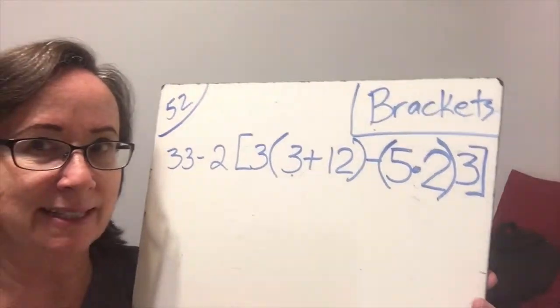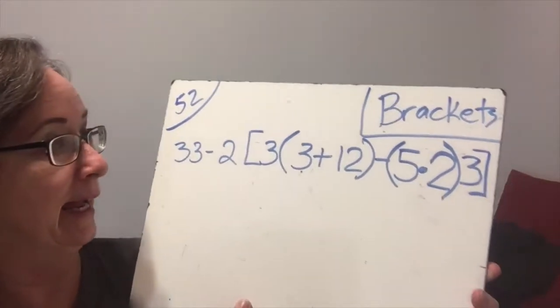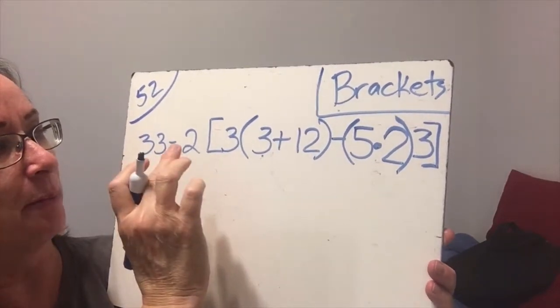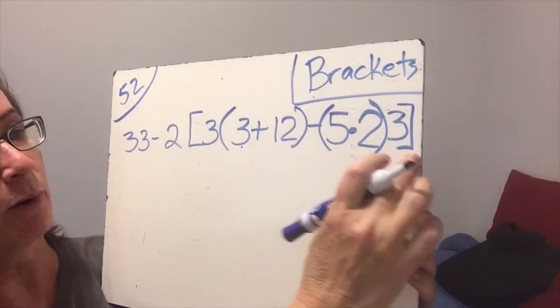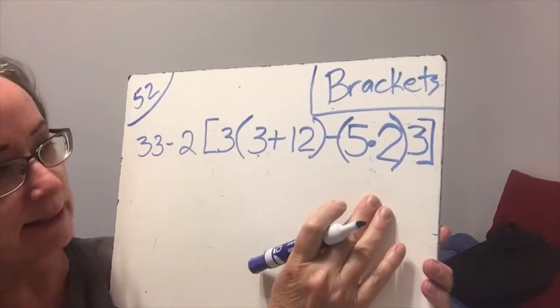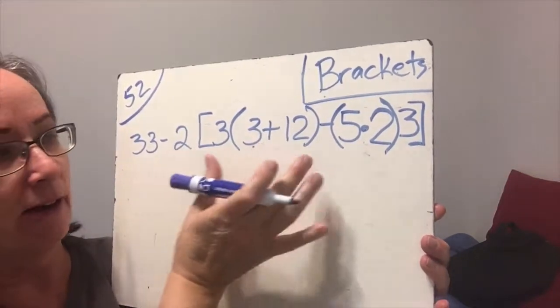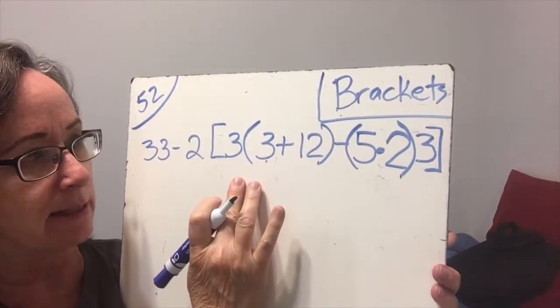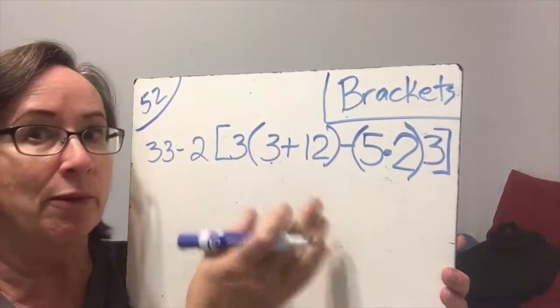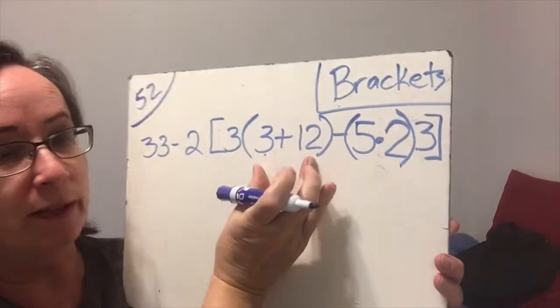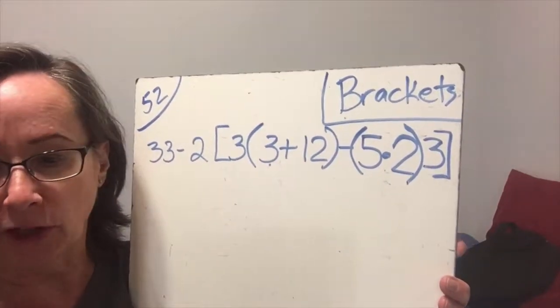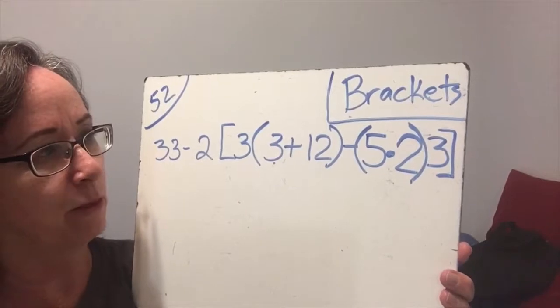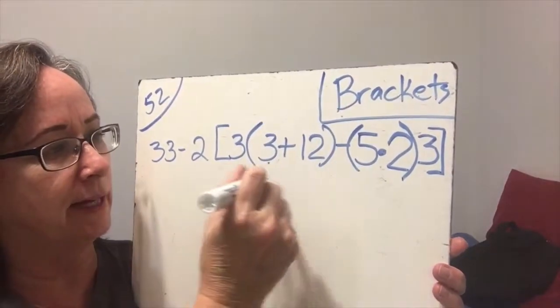So here we have example number 2. We have a bunch of stuff here, and then we have a bracket. And inside the bracket, we have parentheses. So now we're going to start at our leftmost parentheses inside our big bracket. Inside the bracket, we move left to right. So we're going to do this parenthesis first. So we have 3 plus 12 is 15.